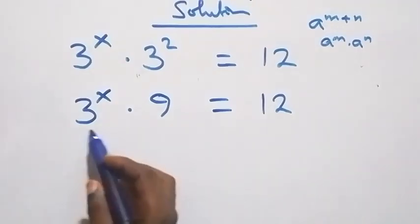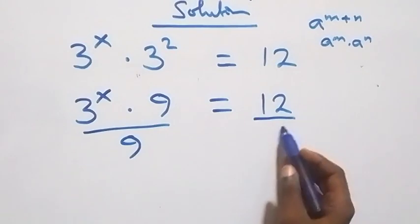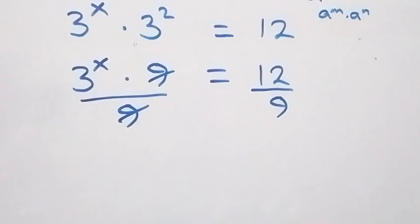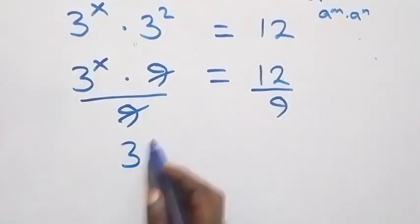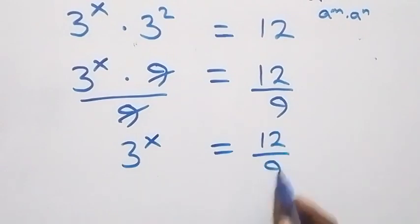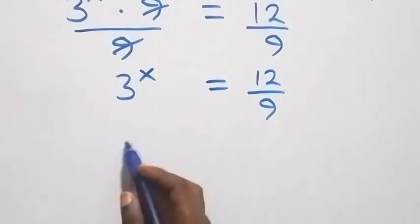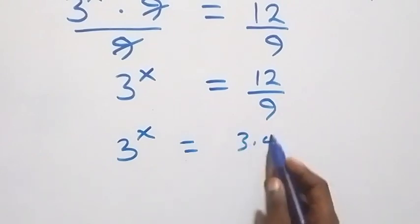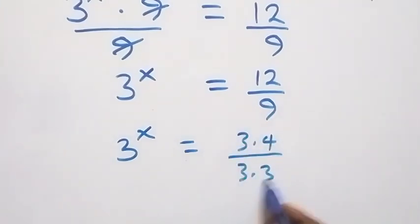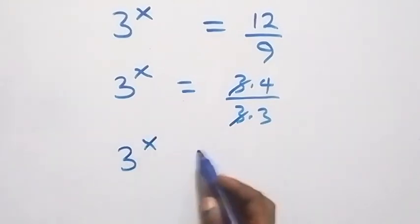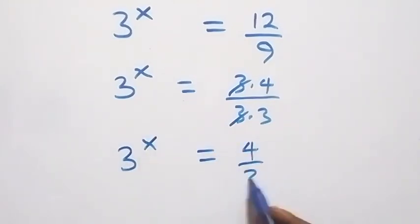Then we divide both sides by 9 — divide here by 9, also divide this side by 9. The 9s cancel each other. We have 3 raised to power x equals 12 over 9. We can write this as 3 times 4 over 3 times 3, and the 3s cancel, leaving 3 raised to power x equals 4 over 3.